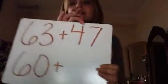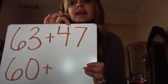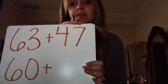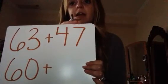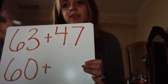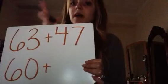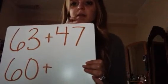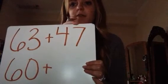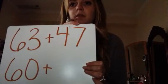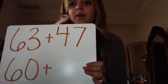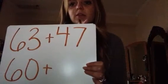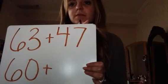Now let's look at 47. Remember, if it ends in a 1, 2, 3, or 4, it gets rounded down. If it's 5, 6, 7, 8, or 9, it gets rounded up. So looking at 47 — is it closer to 40 or closer to 50? It's closer to 50, so I would write 50.